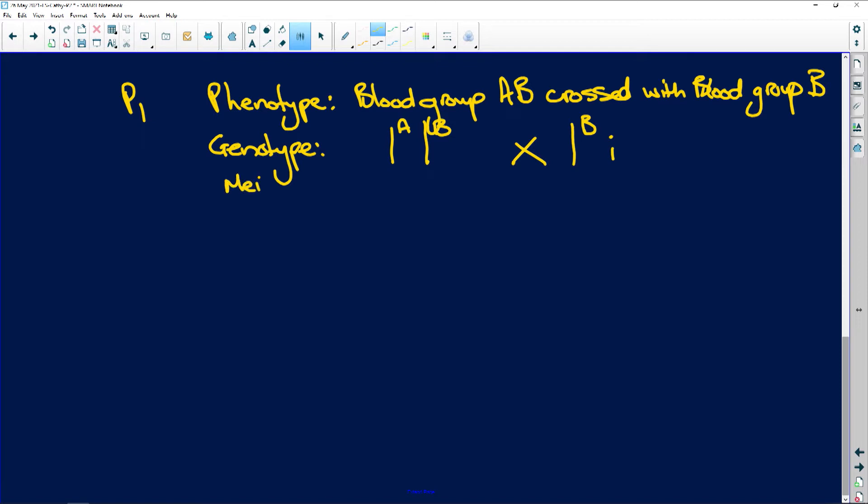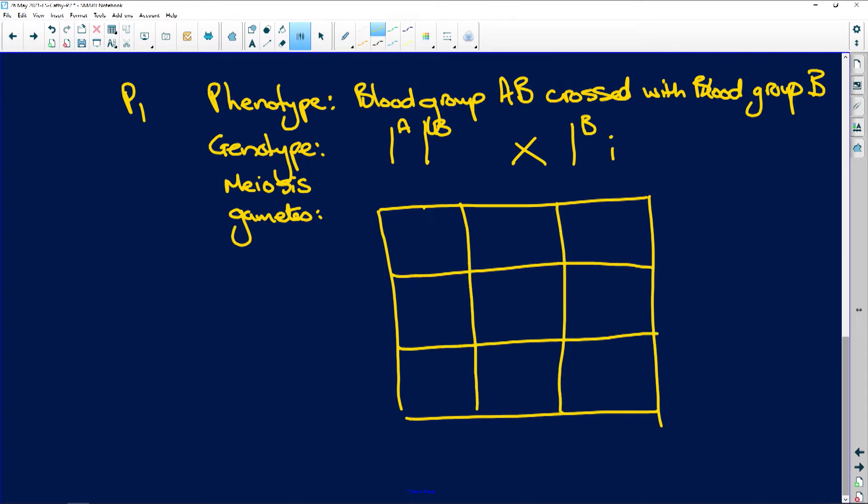So we have meiosis occurs, and then we have our gametes, and the gametes are going to look like this. We draw a Punnett square, nine little blocks, and here are the gametes. We are going to have allele A and allele B, and then we have that allele B and I. And then we have fertilisation here.